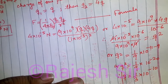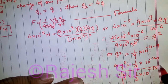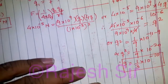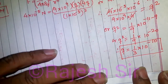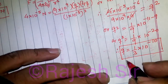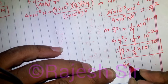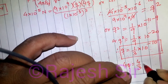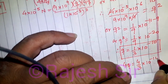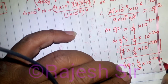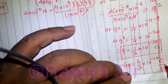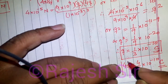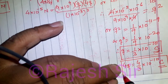Therefore q equals 1 by 3 into 10 to the power of minus 10 coulomb. This is the charge of the first dust particle. The charge of the second dust particle will be 4 times of q, so q2 equals 4 by 3 into 10 to the power of minus 10 coulomb. Don't forget to mention the units — without units, answers are always considered wrong.